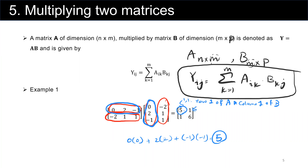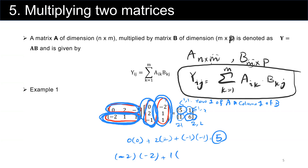For element (1,2), you multiply the first row and second column, which gives the corresponding value. For element (2,1), you multiply the second row of the first matrix by the first column of the second matrix. For element (2,2), you multiply the second row by the second column: negative 2 minus 2 plus 1 times 1 plus 1 times 4 plus 1 plus 1, which equals 6.